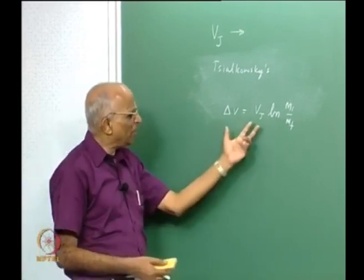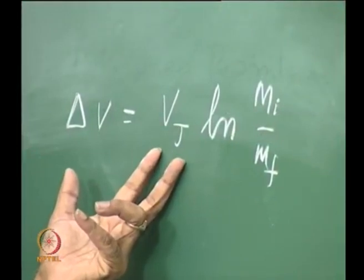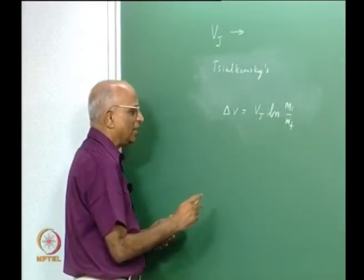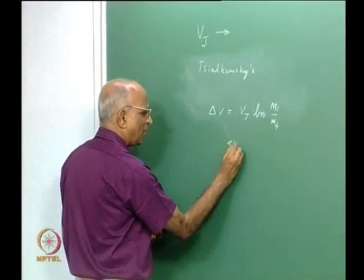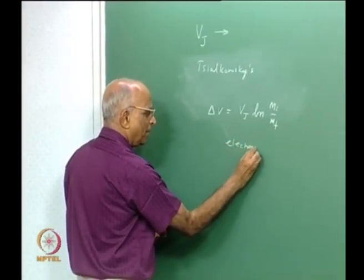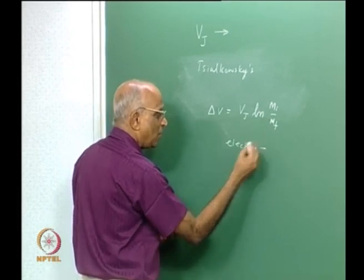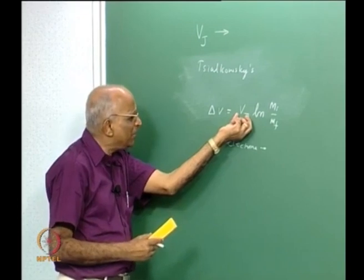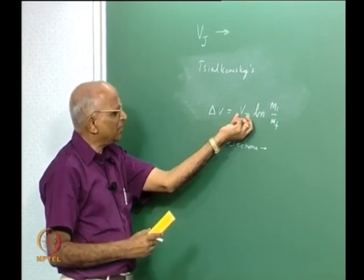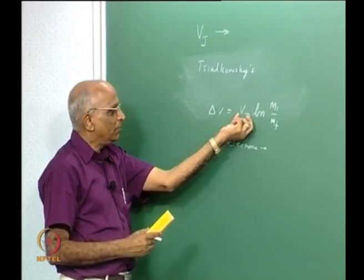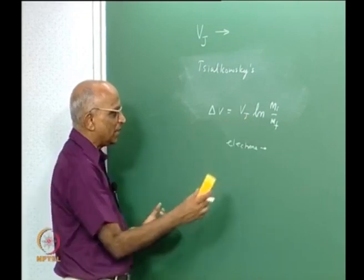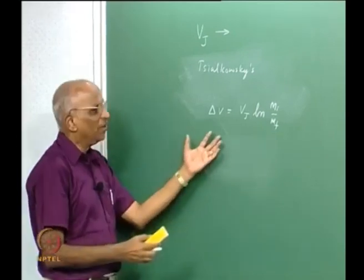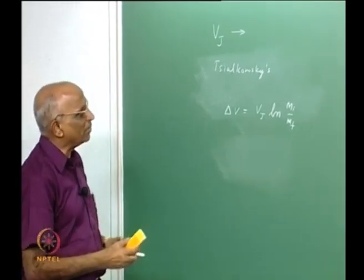After Tsiolkovsky, Goddard — maybe ten or twenty years later, around the 1930s or 1940s — was also interested in using electrons. Could electrons be made to go at the speed of light to get a high value of Vj? There are limitations — not in getting a high Vj, but from the basic equations, is there some limit to what Vj is possible? That is what we will try to determine in the next five or ten minutes.